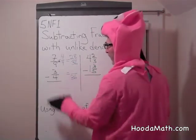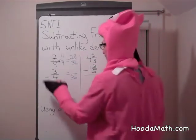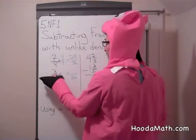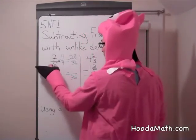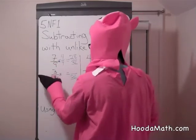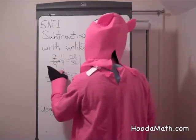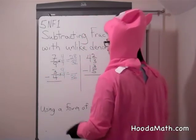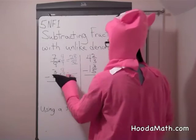What should we multiply 3 fourths by? 4 goes into 36 nine times, because 9 times 4 equals 36. So we multiply by 9 over 9, a form of 1. 9 times 3 equals 27.